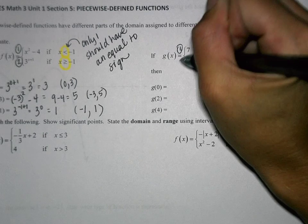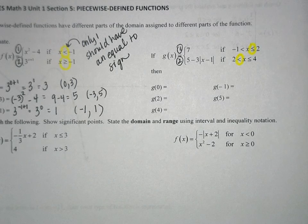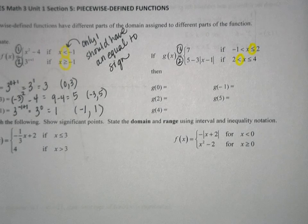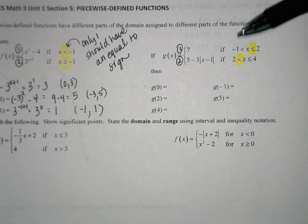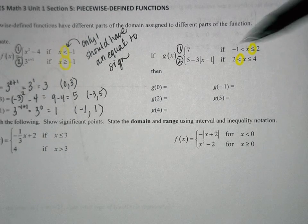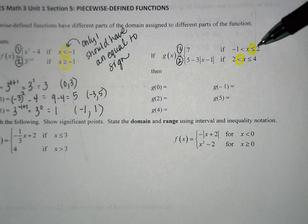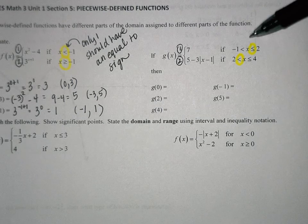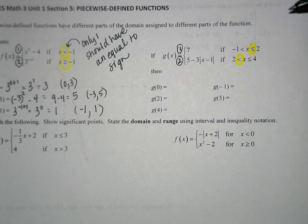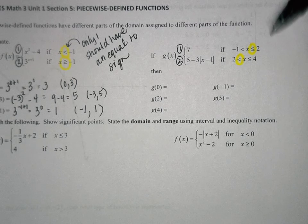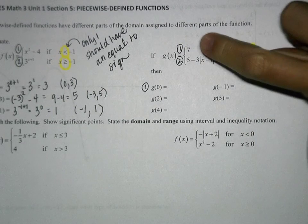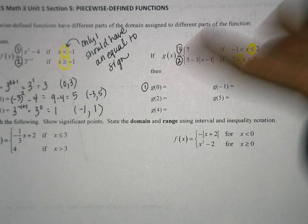Let's label these as equation 1 and equation 2. G of 0 — which equation would that be for? It'll be 1, because this one is saying the values from negative 1 to 2. Is 0 in between negative 1 and 2, or is 0 between 2 and 4? We're going to use the first one. 0 is in between the values of negative 1 and 2. That's equation 1. Notice there's no x value here to plug 0 into.